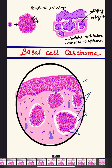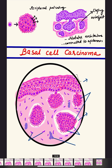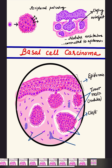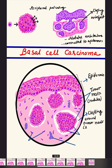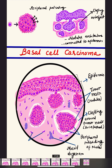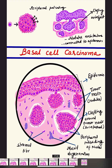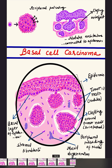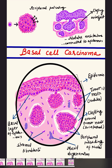We label the clefting artifact, the peripheral palisading nuclei, the mucoid area of degeneration, and the fibroblasts in the stroma. Labels include: epidermis, tumor nests or nodules, clefting artifact (the clear area), peripheral palisading of the nuclei, mucoid degeneration in the stroma, stromal fibroblasts, and lastly the basal layer of the epidermis from which this tumor is arising.